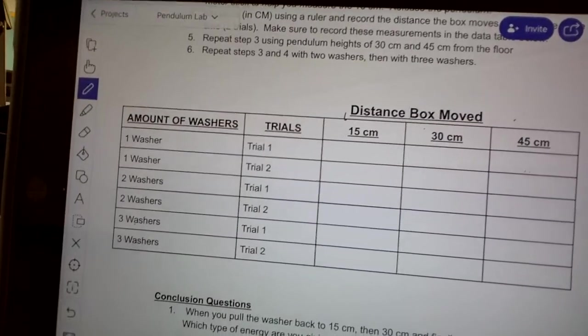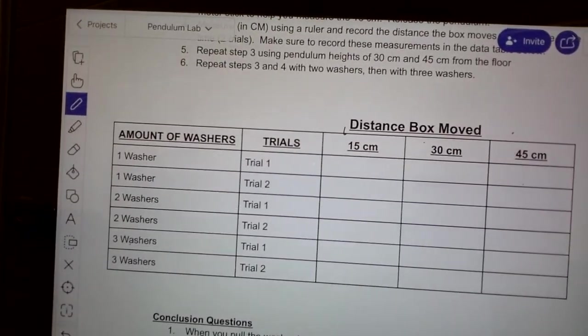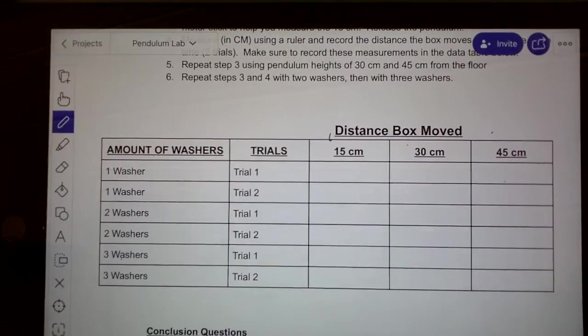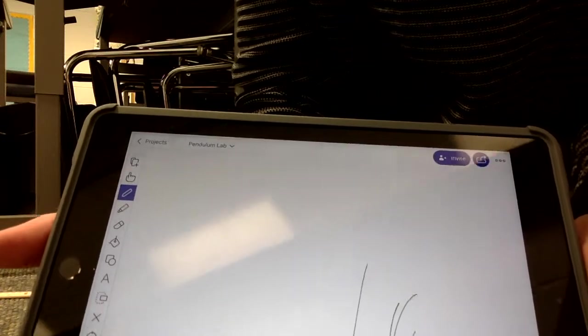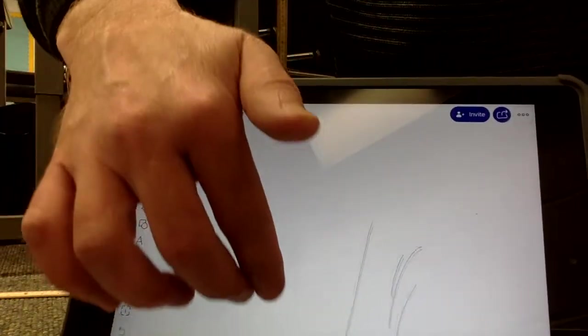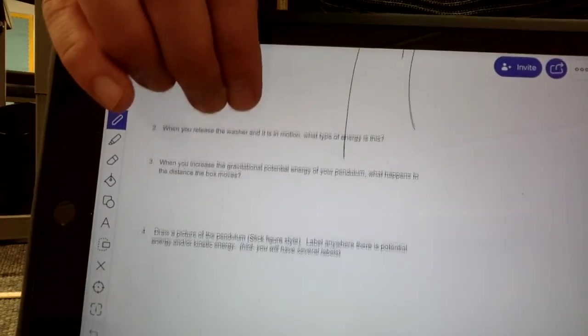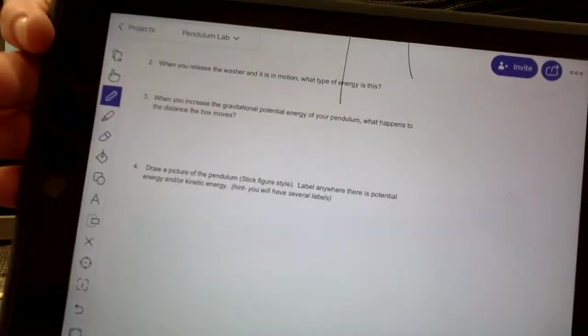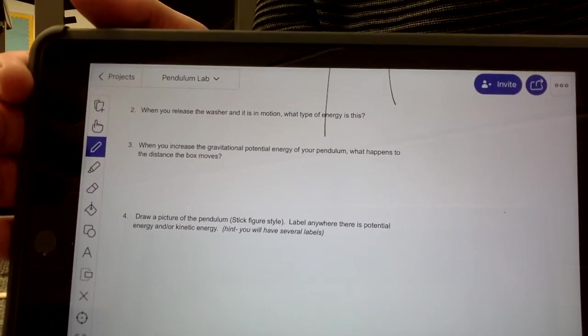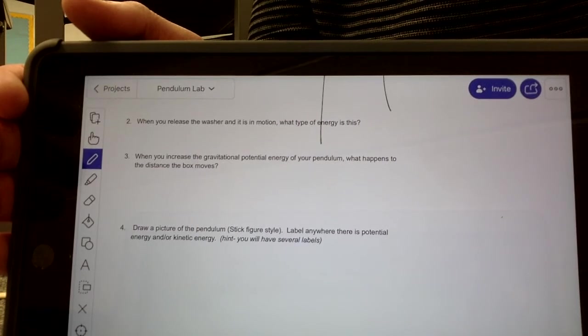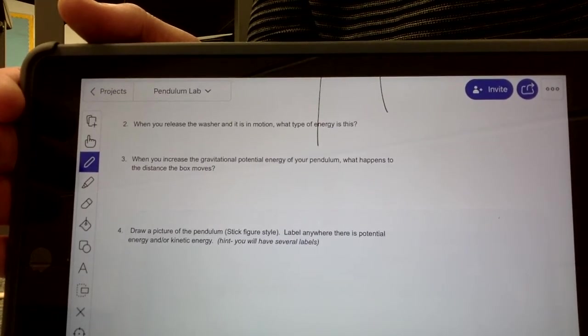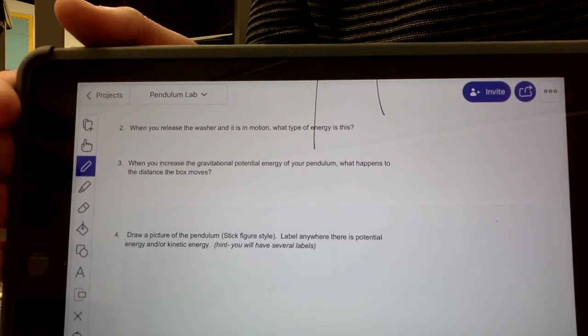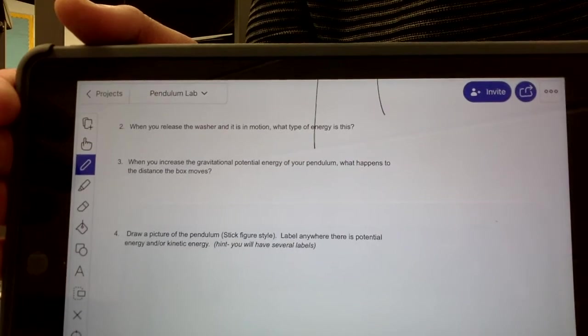Now at this point, this data table should be completely filled out. If it's not, you can always go back and re-watch parts that you missed. Assuming that you have it all filled out, then there are some conclusion questions to do. There are a couple conclusion questions, numbers 2, 3, and 4 that you want to complete on your lab sheet there in Notability, and then just save it. If you have any questions, feel free to shoot me a Schoology message and I'll get back to you. Have a good day.